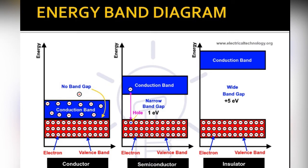The energy band diagram compares conductors, semiconductors, and insulators. The valence band is shown in red at the bottom and the conduction band in blue at the top. In the case of a conductor, there is no band gap — these bands may overlap, so electrons are easily available in the conduction band. In semiconductors, there is a very narrow band gap of about 1 electron volt, while in insulators the band gap is wider, approximately 5 electron volts.